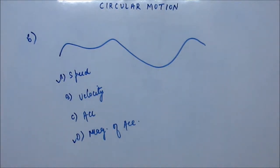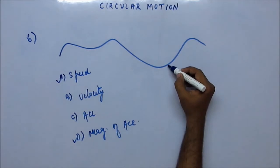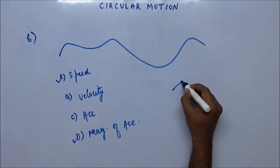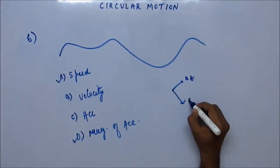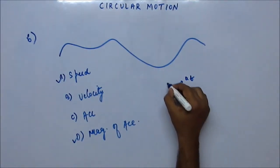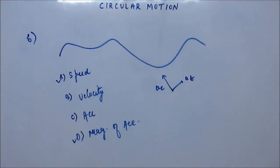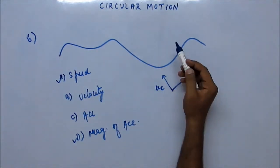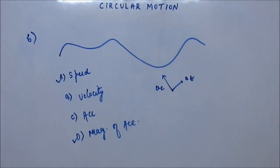Velocity is changing its direction, so acceleration would also change its direction. There are two components of acceleration: one is along the velocity — tangential acceleration — and the other is perpendicular to the velocity — centripetal acceleration. Even if you make the tangential acceleration constant, centripetal acceleration will never remain constant because it will always be perpendicular to the tangent and that direction would keep changing. So total acceleration cannot remain constant.